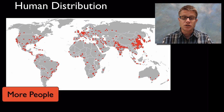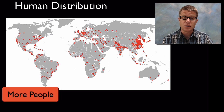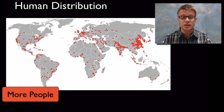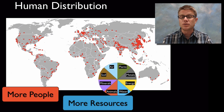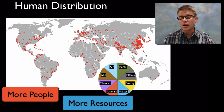This map right here shows the population — the cities that have high population. Each of the red dots on this map represents a city with at least a million people; we call those mega cities. And what we're finding is that as we get more and more people on our planet they're requiring more and more resources.